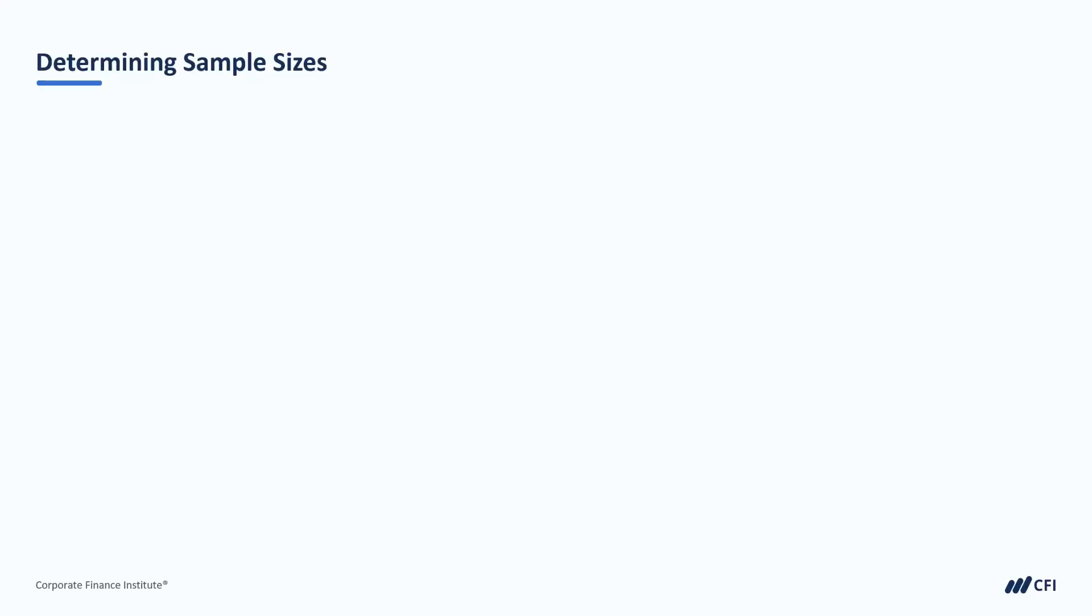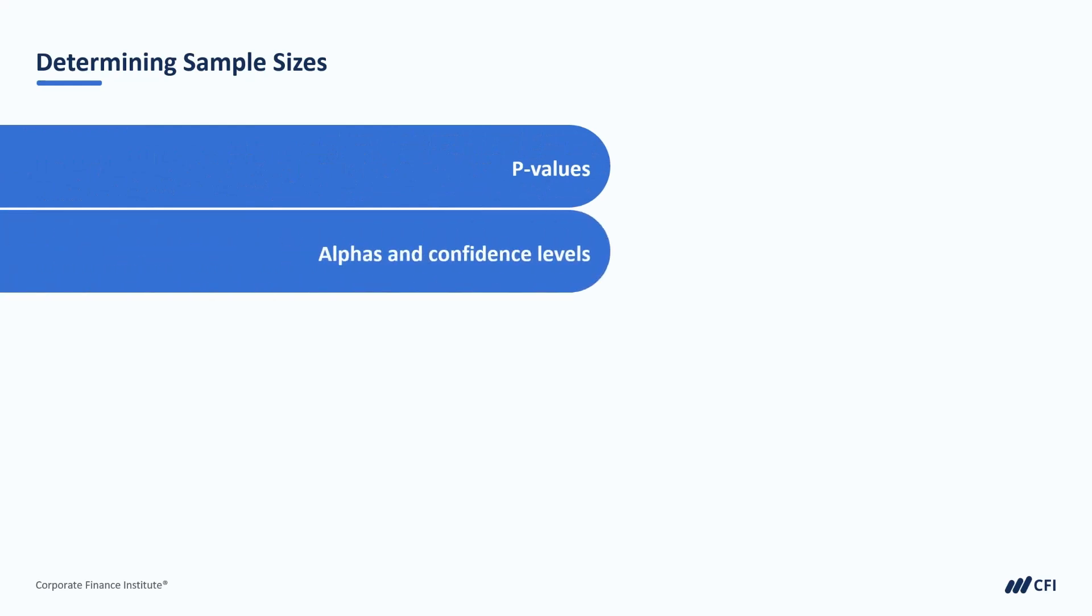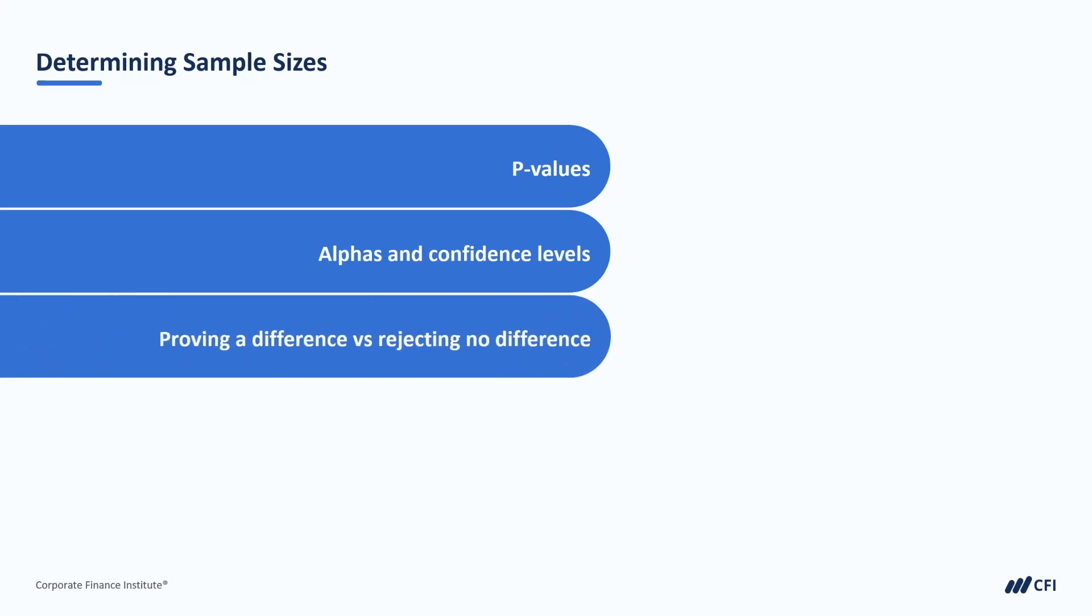We've reviewed some of the most important concepts of inferential statistics so far: p-values, alphas and confidence levels, and the thinking behind our statistical tests, trying to show statements as being false as opposed to proving them to be true. All of these concepts are applied on samples of data that we take from larger populations. So let's take a step back and take a look at some of the important concepts of pulling these samples in the first place.